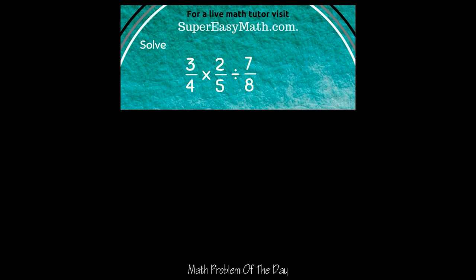One thing I love about multiplying and dividing fractions is you don't have to get a common denominator. So in this case, I'm just going to multiply and divide right away. I'm going to start just with the first two fractions. So I have 3 fourths times 2 fifths. And when I multiply them straight across, I get 6 and 20.